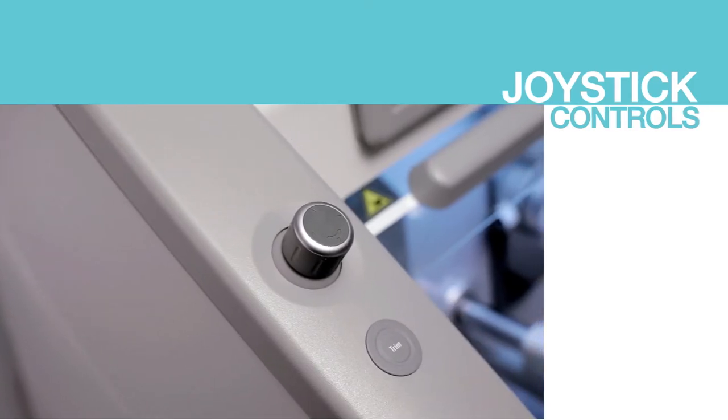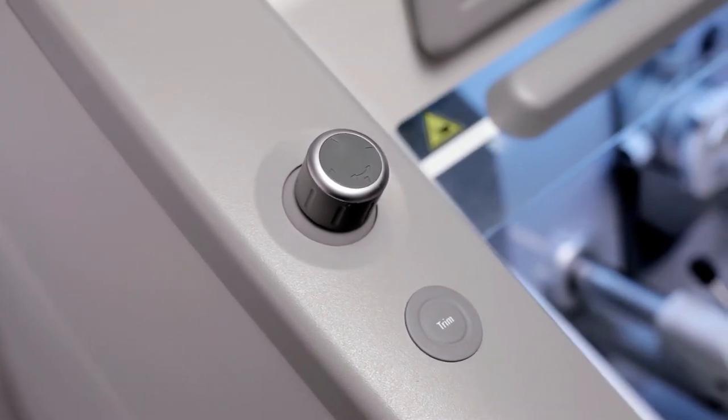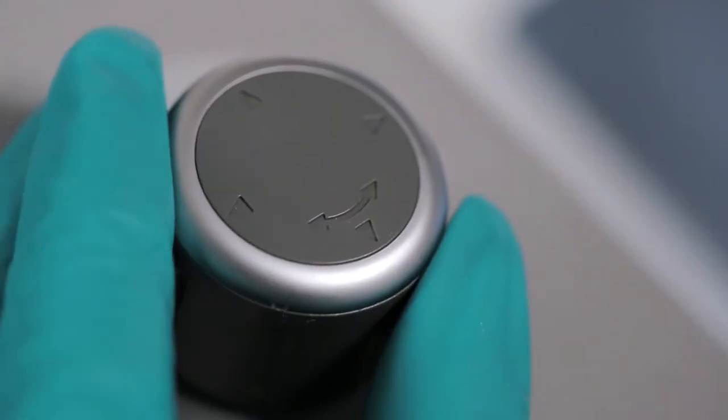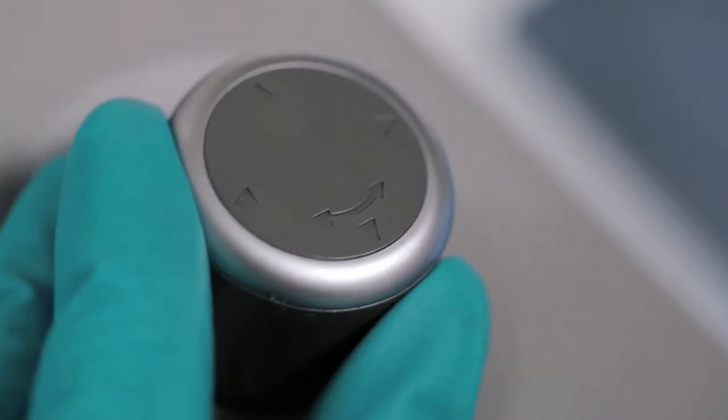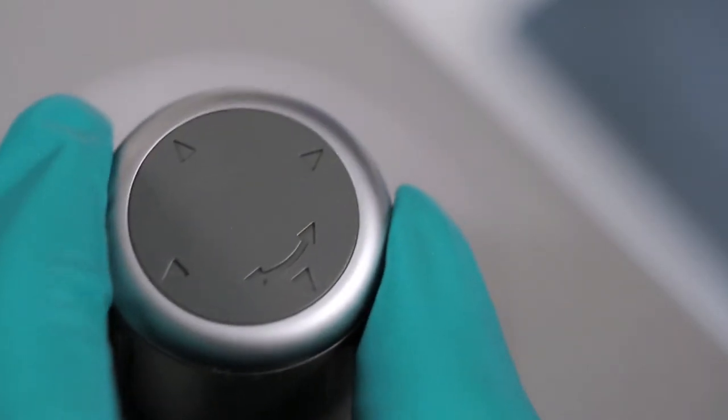The joystick controls many functions and streamlines operations, allowing the user to toggle between trim and fine sectioning by tilting the joystick right and left.